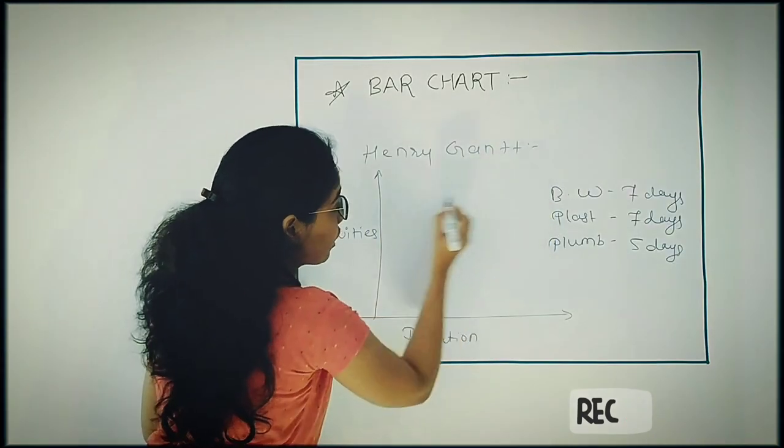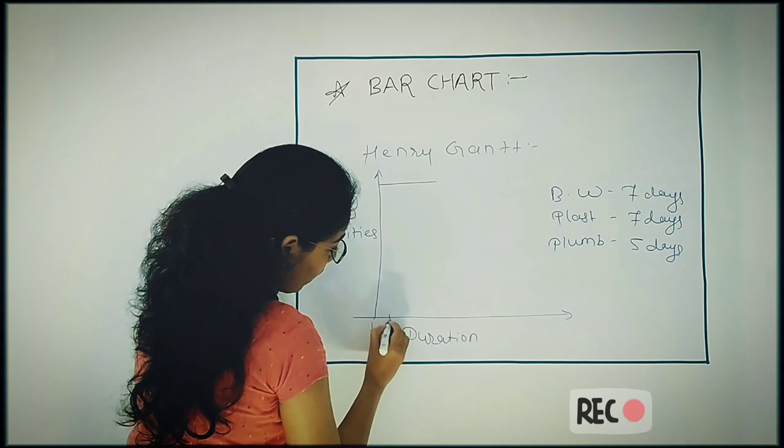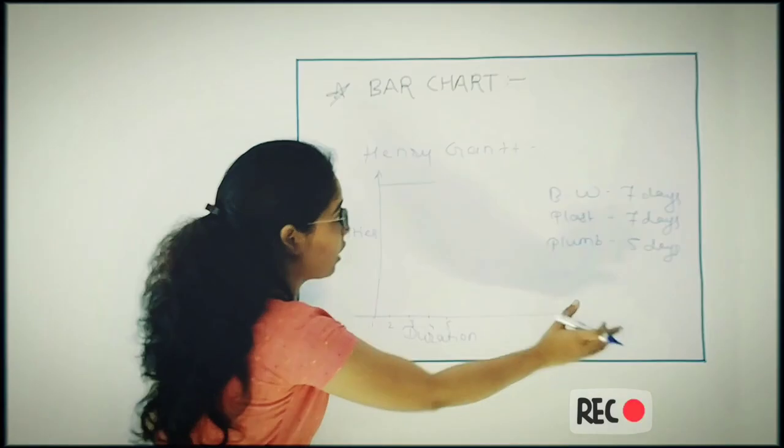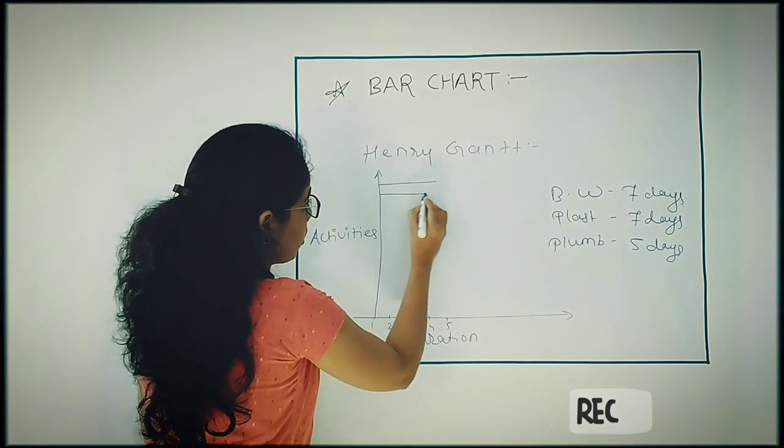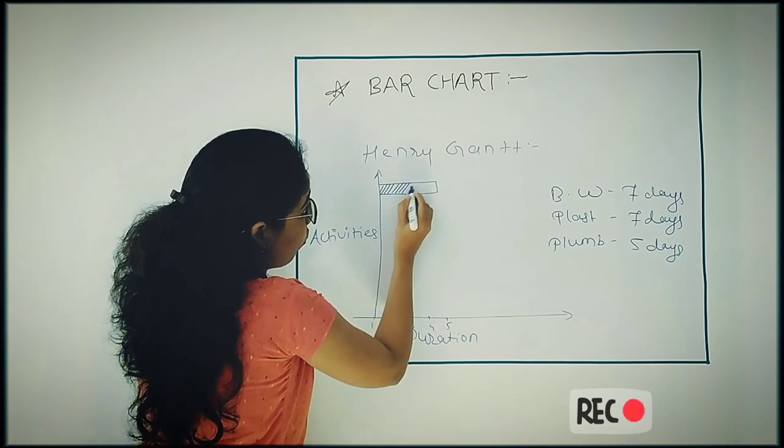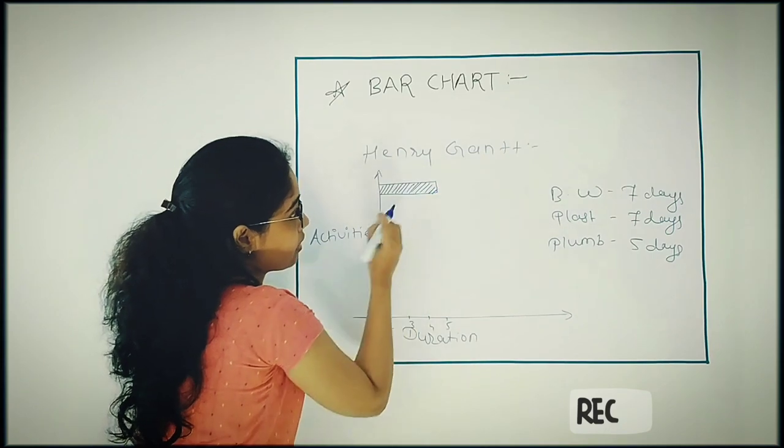Now from this data, you have to draw the graph. Suppose first activity is your brick work. So here one, two, likewise you have to show the duration—duration in days, in weeks, in years, and so on. So this is your first activity. Why it is called a bar chart? Because we are showing this bar, that's why it is called a bar chart.